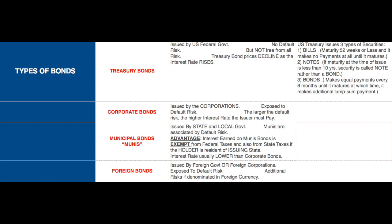Treasury bonds, sometimes referred to as governmental bonds, are issued by the US federal government. It is reasonable to assume that the federal government will make good on its promised payments, so these bonds have almost no default risk. Default risk is also called credit risk. However, Treasury bond prices decline when interest rates rise, so they are not free from all kinds of risk.